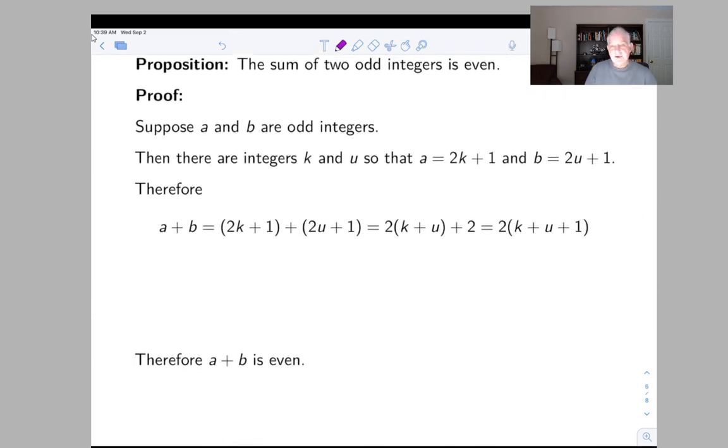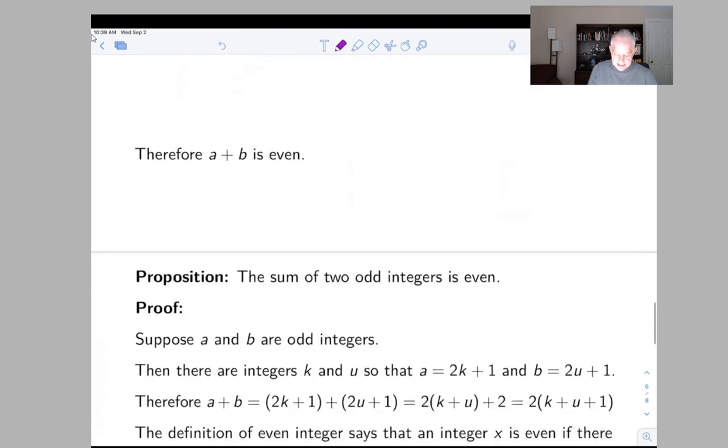Well, we can now compute A plus B and do some algebra. So A plus B is 2K plus 1 plus 2U plus 1, and now we can regroup. That's 2 times K plus U plus 2, or 2 times K plus U plus 1. This isn't supposed to be particularly deep mathematics. So what have we done here? We've shown that A plus B, which is the sum, is 2 times an integer. And an even integer is a number, an integer, which is 2 times another integer.